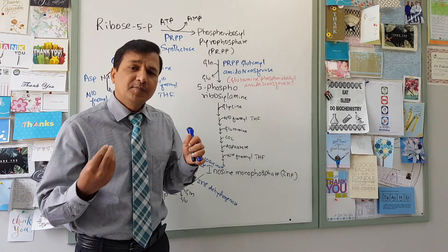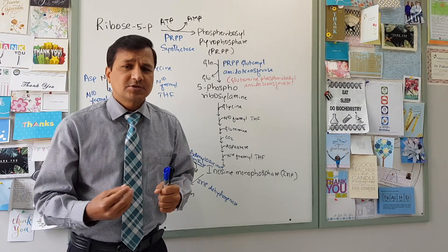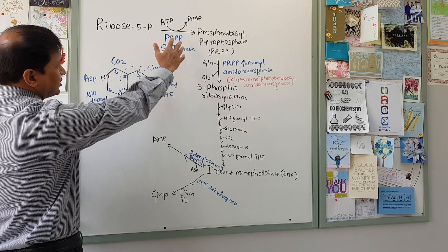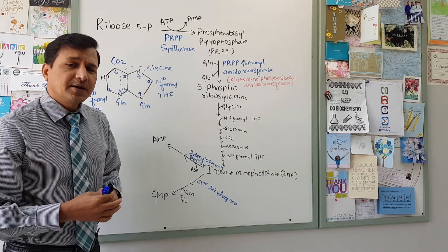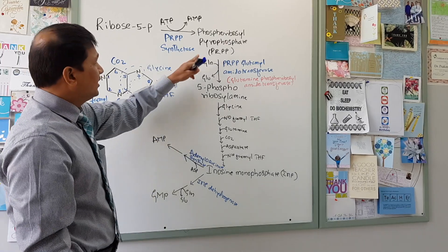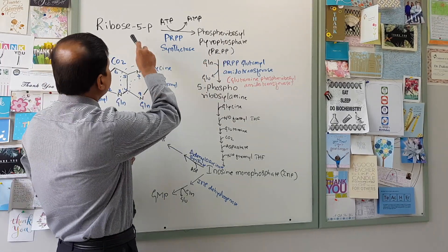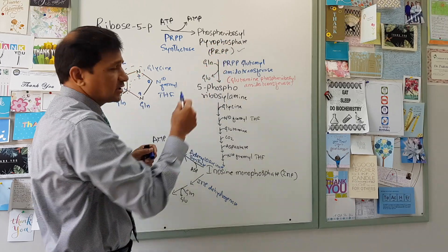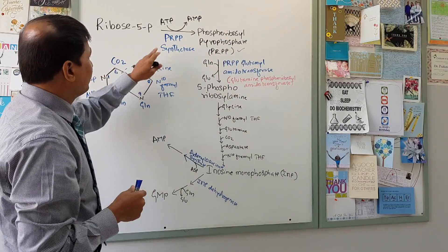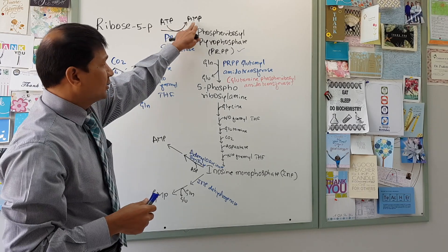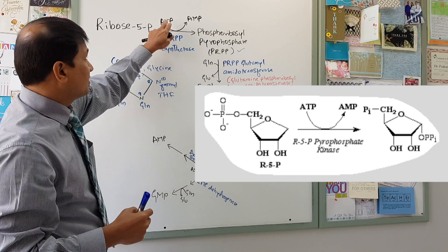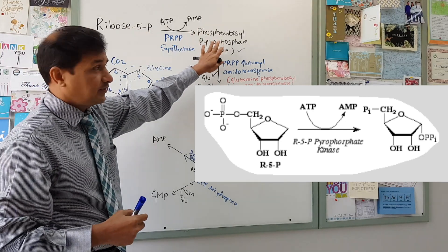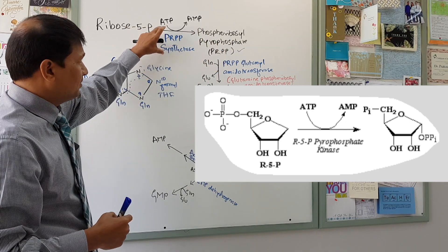It all starts from ribose 5-phosphate, which comes from the pentose phosphate pathway. Ribose 5-phosphate enters the very first reaction toward purine or pyrimidine biosynthesis. To do that, we need to generate PRPP — phosphoribosyl pyrophosphate. Ribose 5-phosphate is converted into PRPP using ATP, which is converted into AMP; the two phosphates from ATP become the pyrophosphate in PRPP. This reaction is carried out by PRPP synthetase.